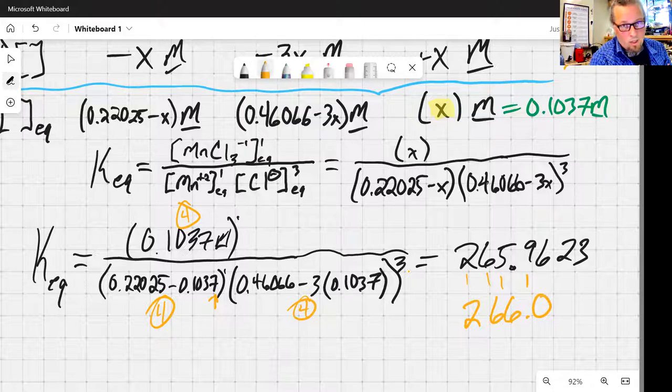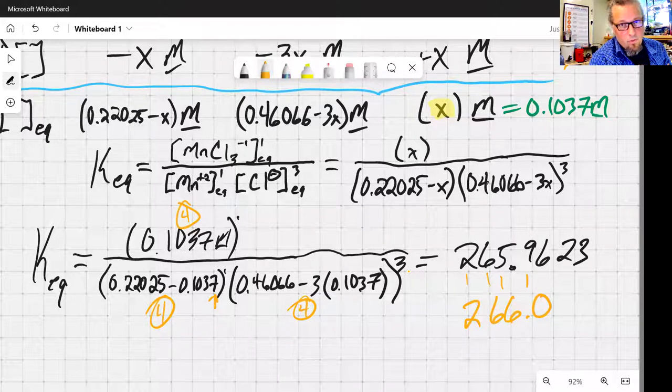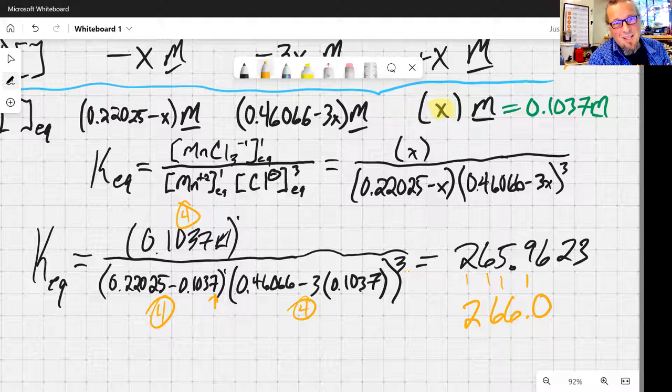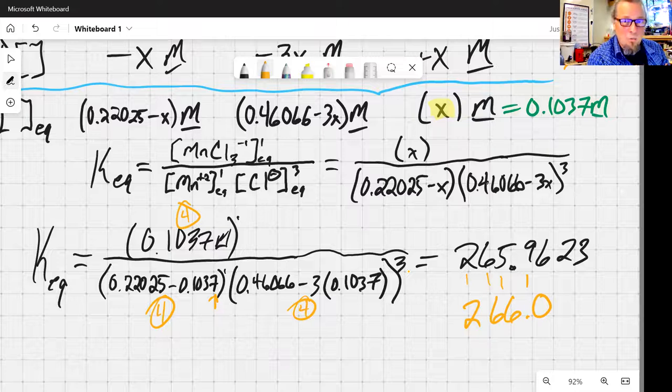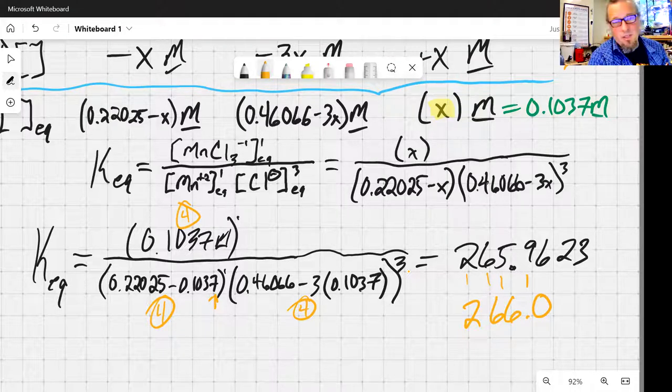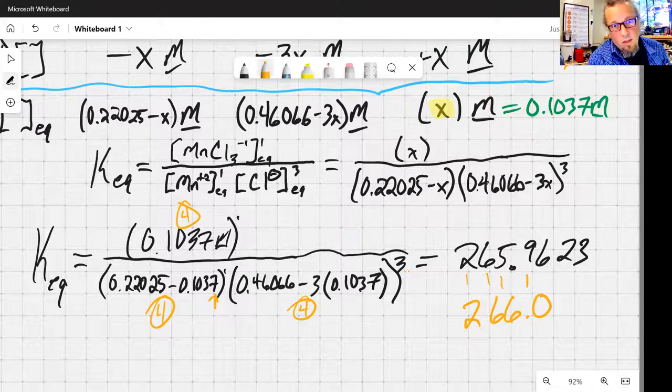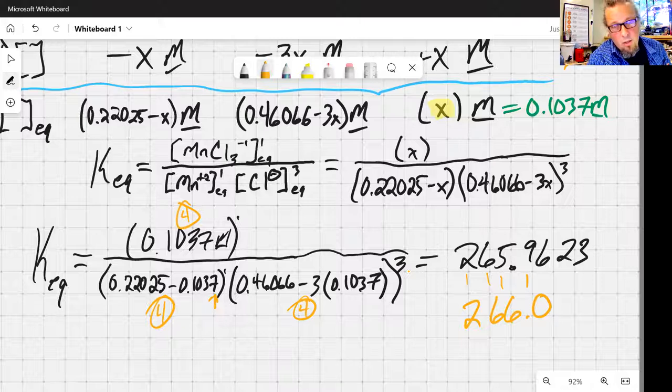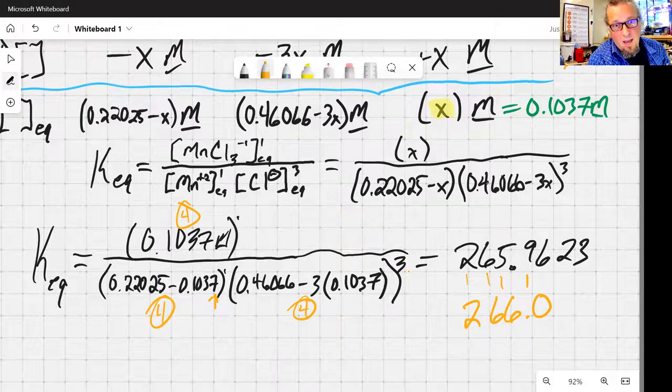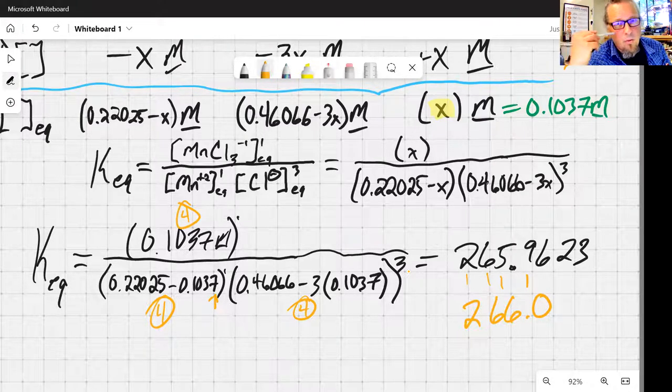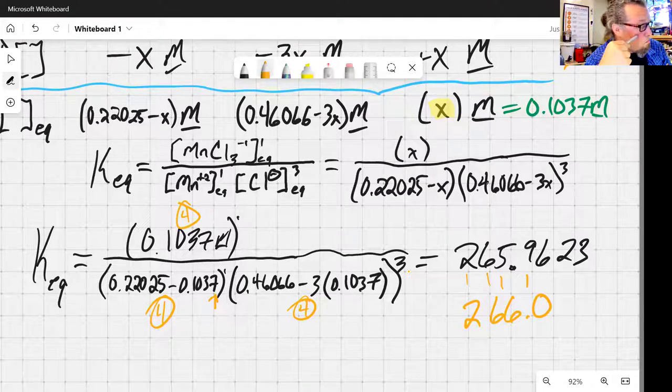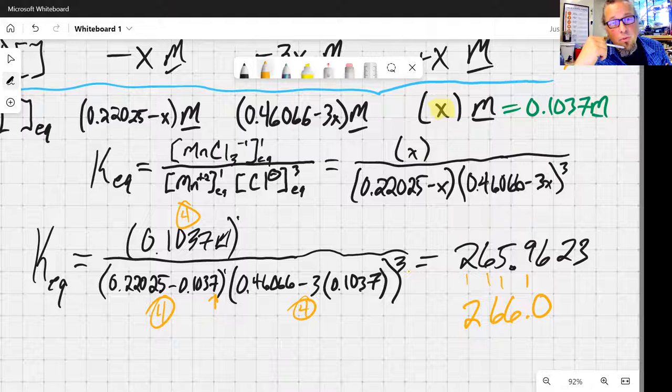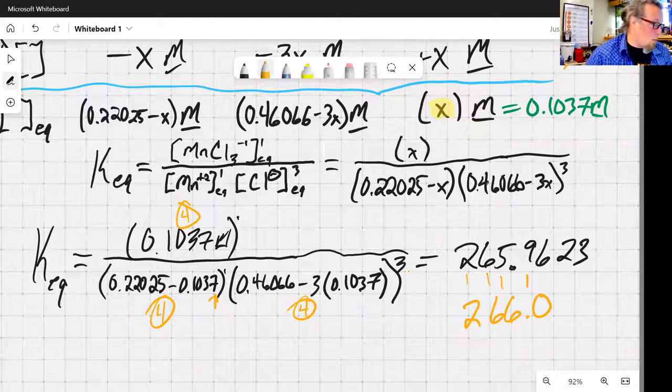Now, the important thing, what does this equilibrium constant tell us? We can crunch through all the numbers, but we need to know what it means. What does it mean if my equilibrium constant is 266? Well, it's greater than one, which means that it is product favored equilibrium. Make sure you know which way that goes.